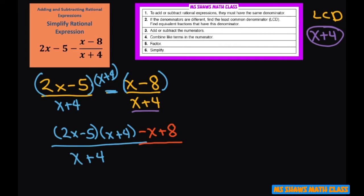So that's what we have. Now we're at the stage where we can simplify the numerator, so we're going to FOIL this out or distribute, whichever method you prefer. We're going to get 2x squared plus 8x minus, let me scoot this over, 2x squared plus 8x minus 5x minus 20 minus x plus 8.